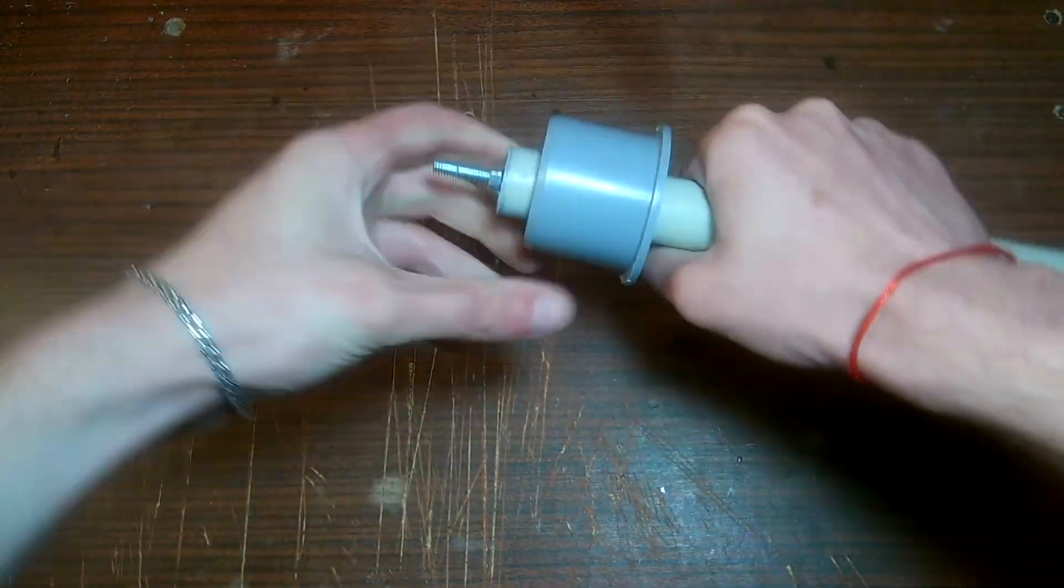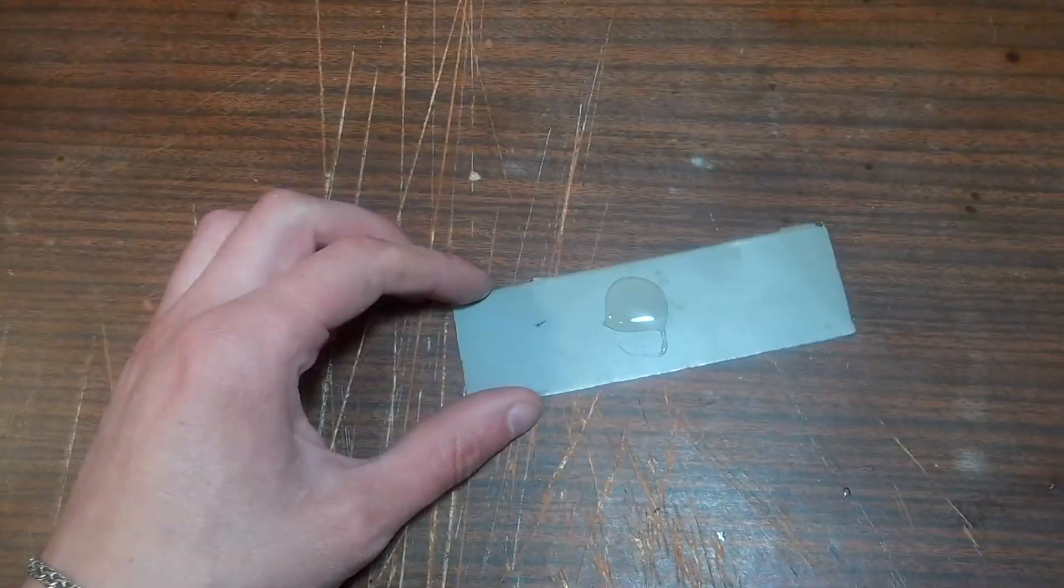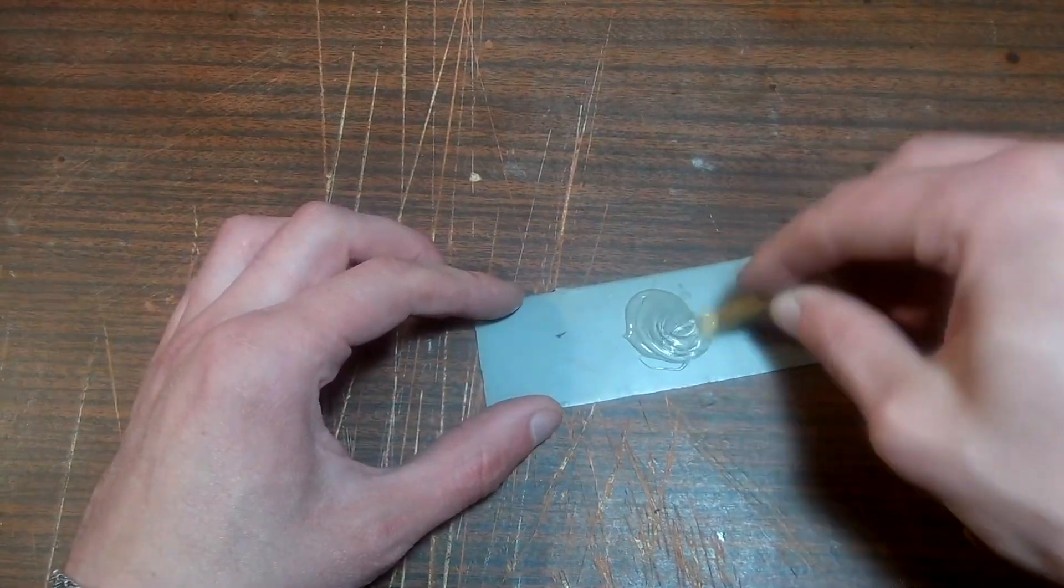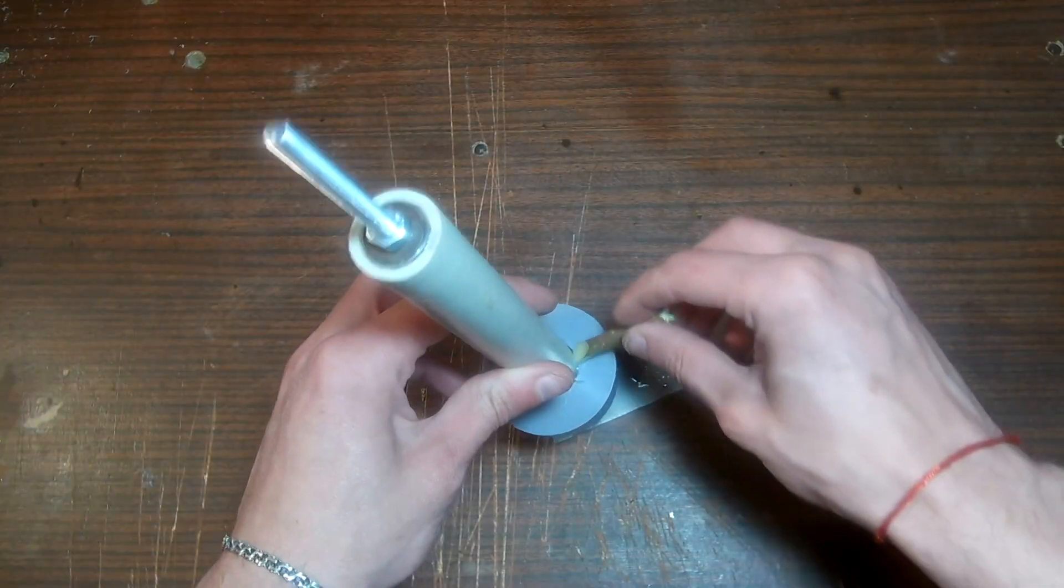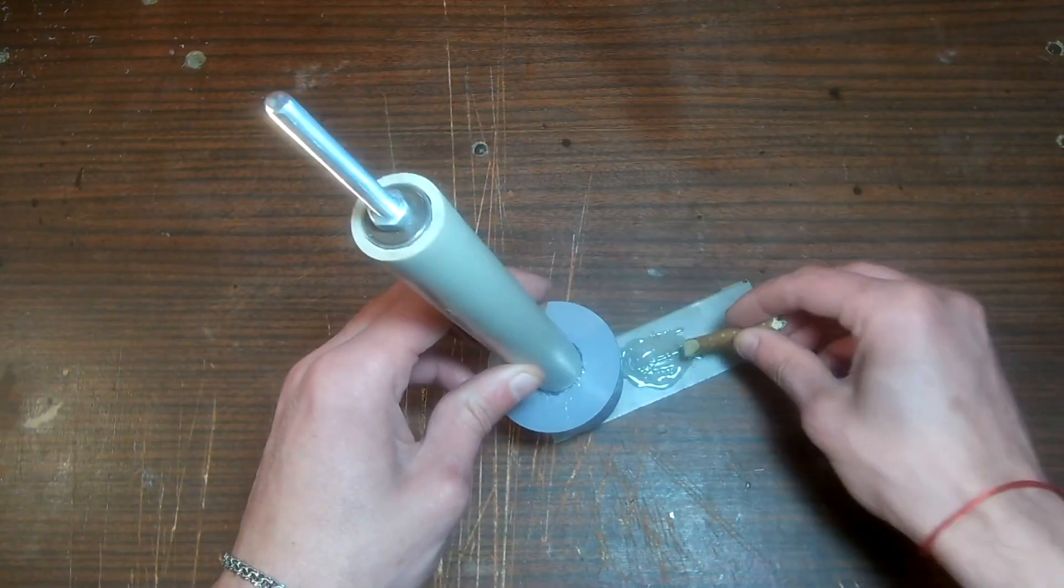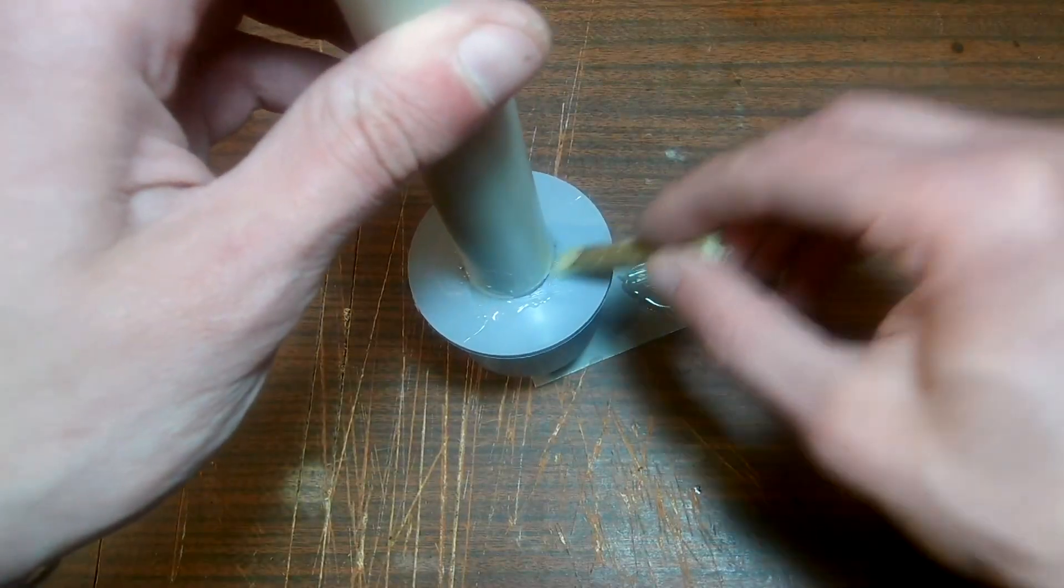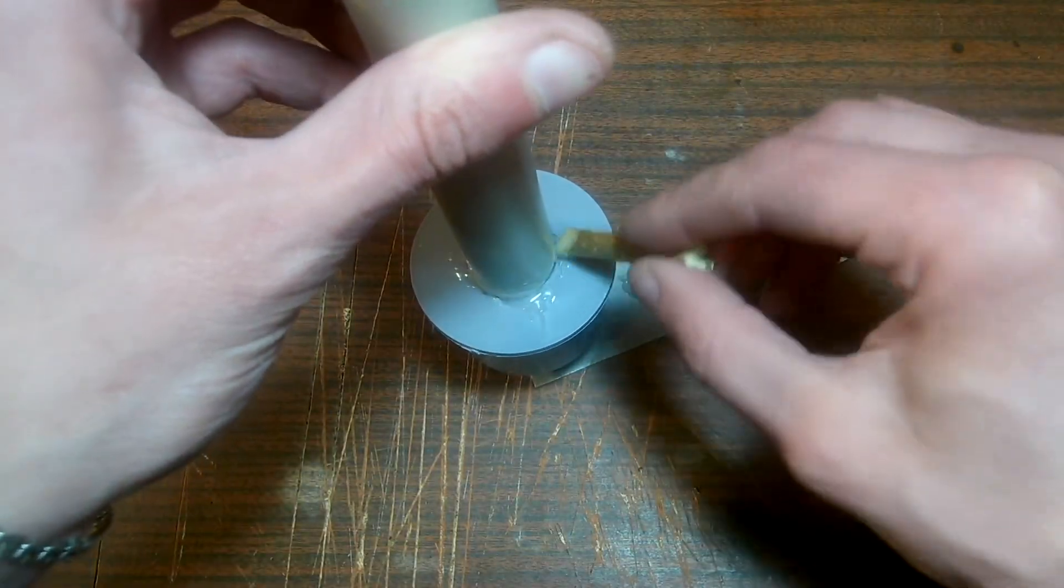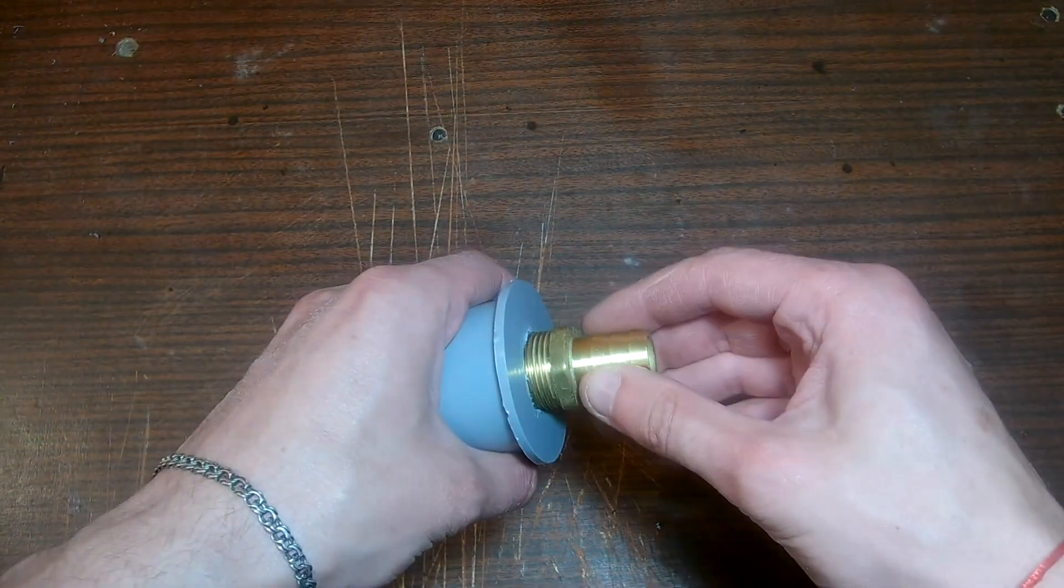We put one cap on the pipe as shown in the video and secure it with glue. You need to insert a fitting into the second cap.